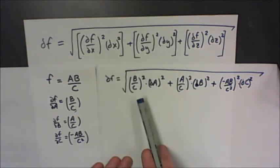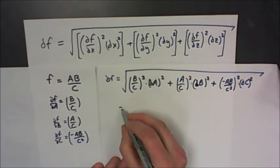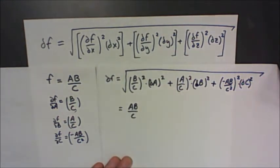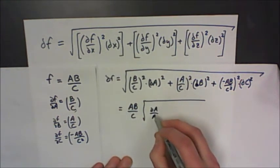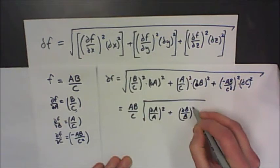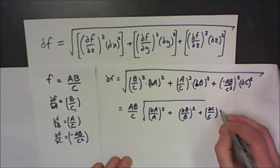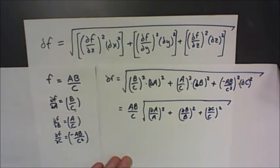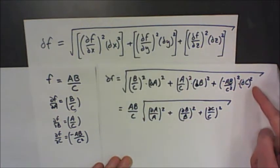At this point you may be thinking: I learned a whole bunch of rules for calculating uncertainties in Physics 1101 or 1120 — where did those come from? Well, let's take ab over c out of the expression by factoring it out. If I factor ab over c out of each term, I end up with delta a over a squared, delta b over b squared, and delta c over c squared — which is exactly the multiplication-division rule from your previous course. In that course you hadn't taken calculus yet, so we just gave you the answers. But this is where they come from: this calculus expression.